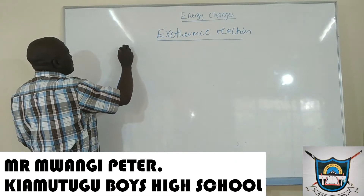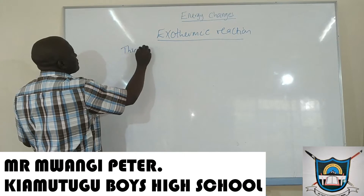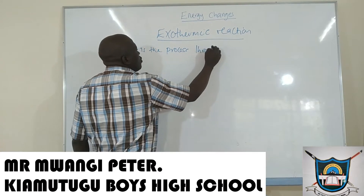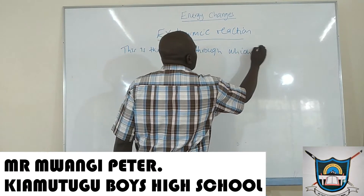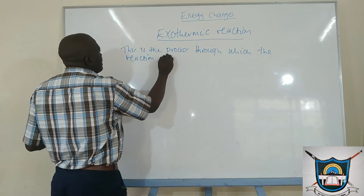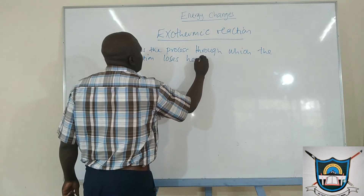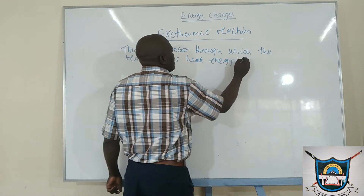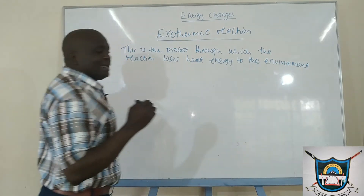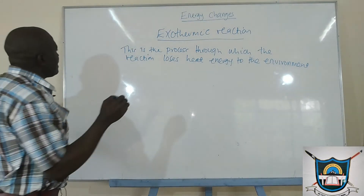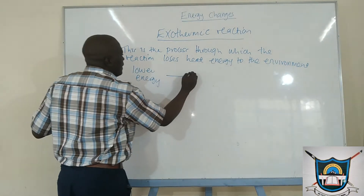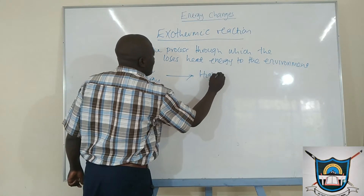In an exothermic reaction, this is the process through which the system or the reaction loses heat energy to the environment. So the heat is lost to the environment. We start with a lower energy and then move to a higher energy.